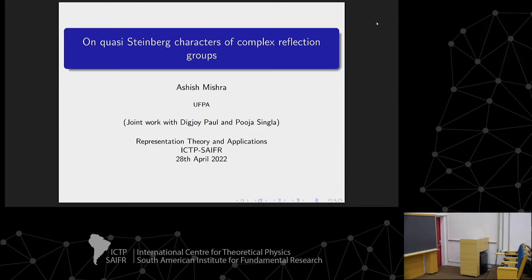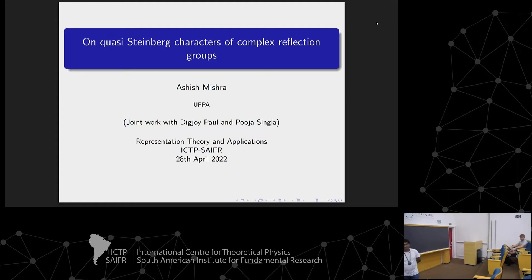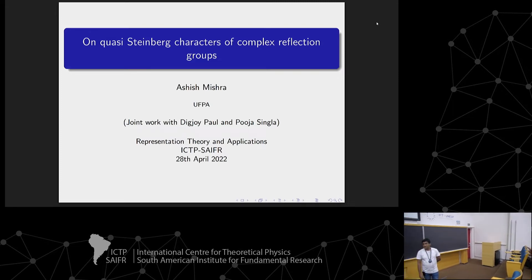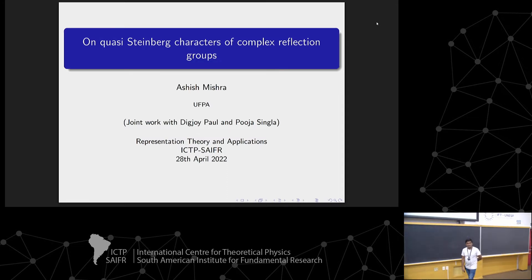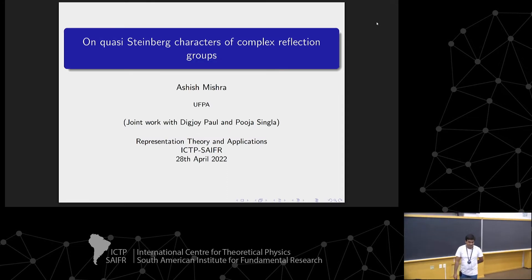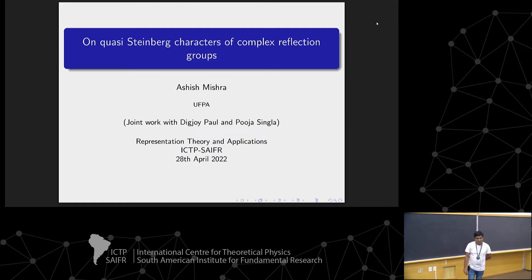Let's start our afternoon session. It's a pleasure to introduce Ashish Mishra from UFPA. His title is 'On Quasi-Steinberg Characters of Complex Reflection Groups.' First of all, I thank Slava for the invitation to present this talk here. This is a joint work with Dikjoy Paul, who is at Tata Institute, and Pooja Singla, who is at IIT Kanpur.